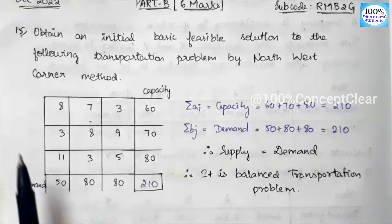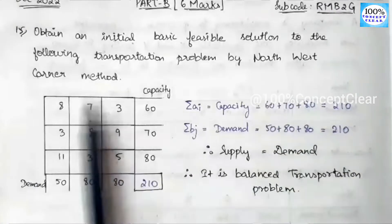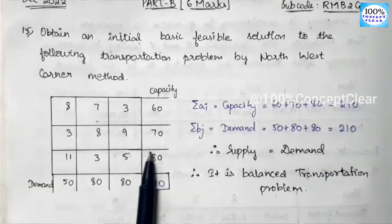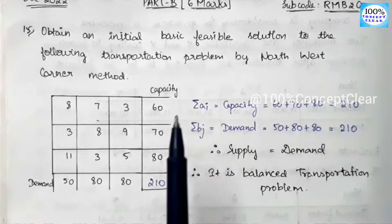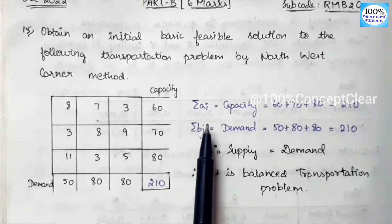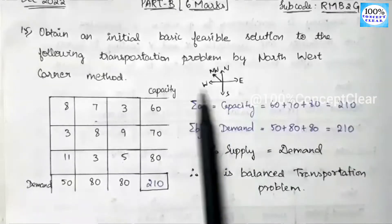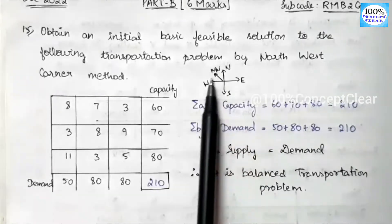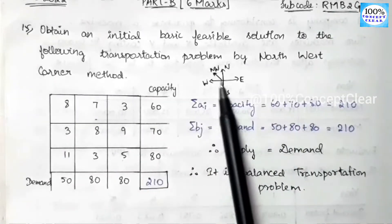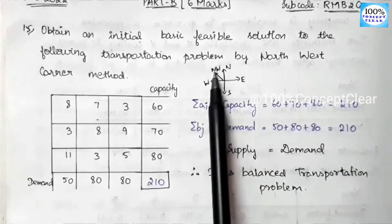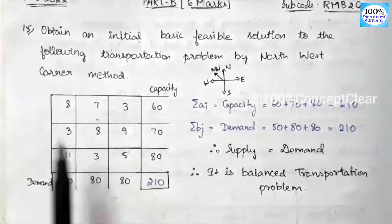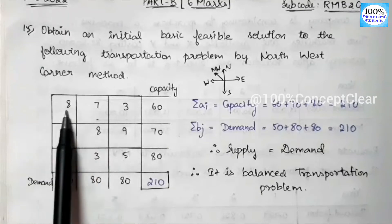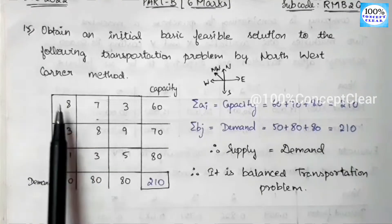Now, we have to solve this using the North-West Corner Rule method to find the initial solution. In this method, whichever element is in the north-west corner — that is, the upper-left portion — we allocate that element first. North is up, south is down, east is right, and west is left. We start from the top-left cell and allocate based on comparing demand and supply, choosing the least value of the two.